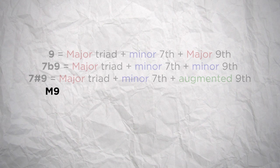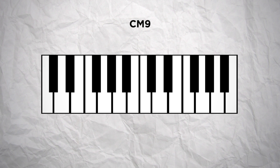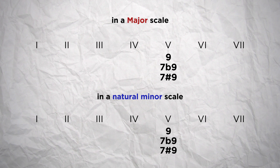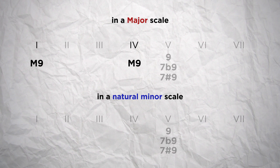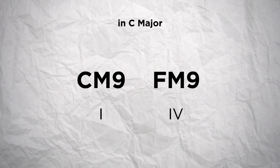Then you have a major 9th chord, which is made of a major triad with a major 7th and a major 9th — so that's a major 7th chord to which we add a major 9th. On a C chord, that would be made of the root note C, the major 3rd E, the perfect 5th G, the major 7th B, and the major 9th D. This is a type of chord you can use on the 1st degree or the 4th degree in a major tonality, but you can also use it on the 3rd and 6th degree of a minor tonality. Using the major 9th chord on these degrees would work better because it would use only the notes already in the scale you're using.